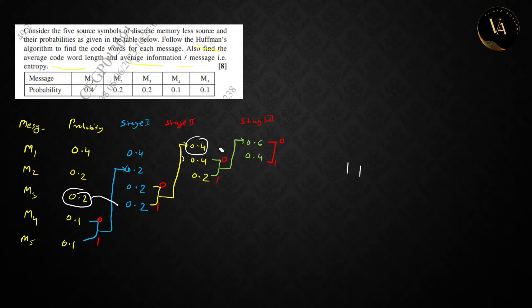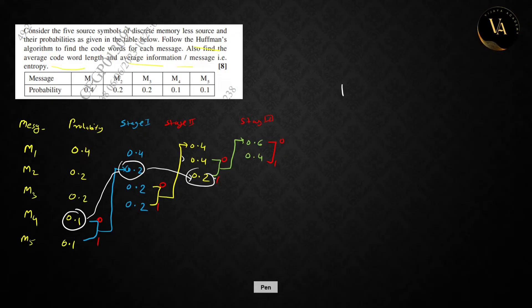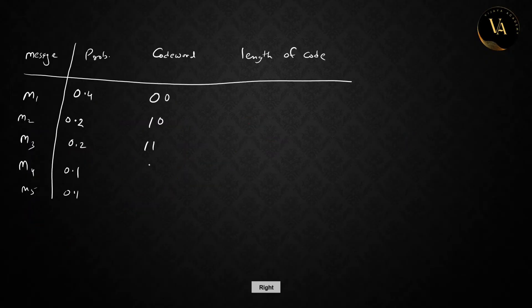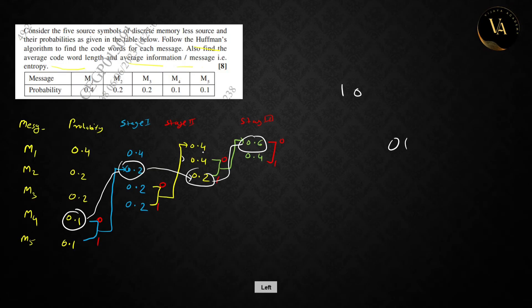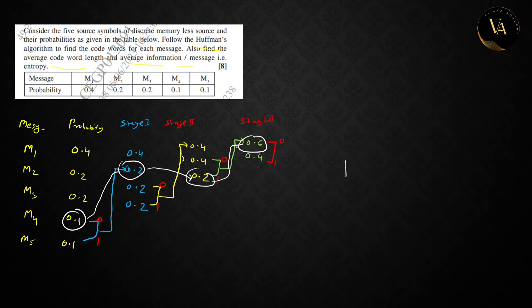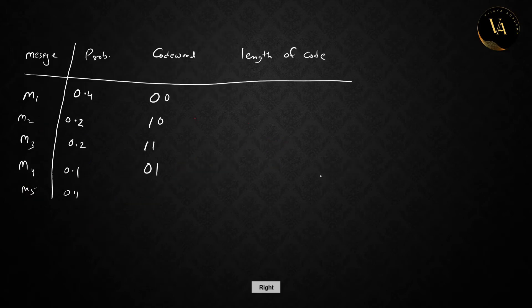Next, for 0.1 and 0.1 combined to make 0.2, no value is assigned at that merged node. The 0.2 here gets value assigned as 1. Then reading the path: for 0.2, value assign 1; next 0 is assigned; then 1; giving code word '010'.